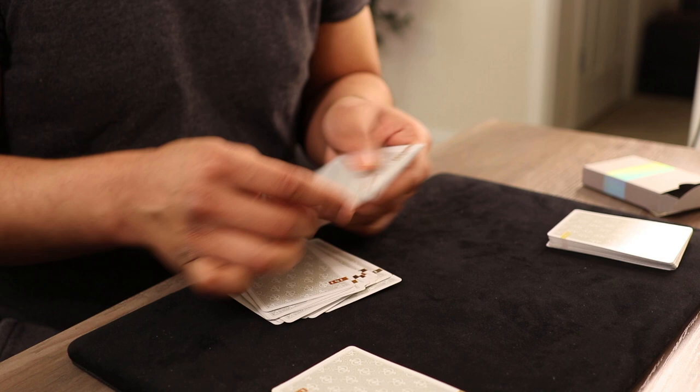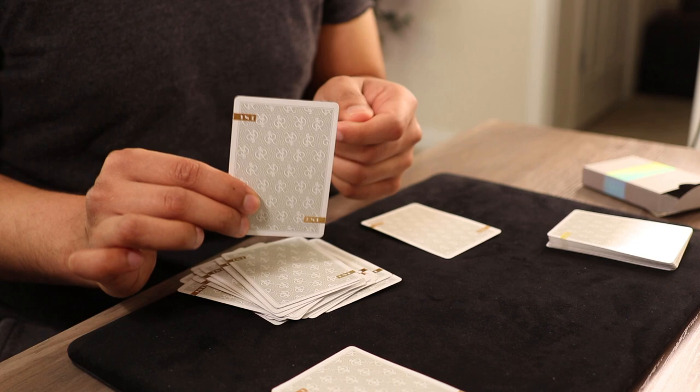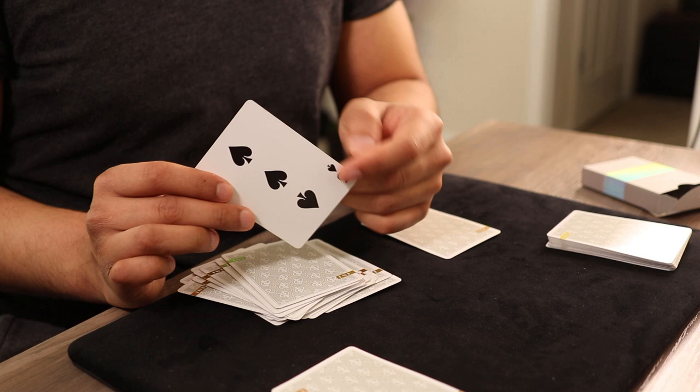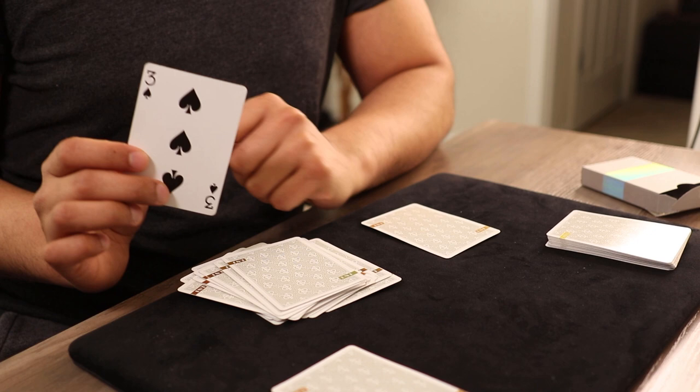Now, this card, the deck was completely shuffled by you. Once the deck was shuffled, I made a prediction. You went ahead and as I dribbled through the deck, you called out stop wherever you wanted. And then from there, you were able to stop wherever you wanted in this pile as well. And we ended up with your card being the 3 of spades.